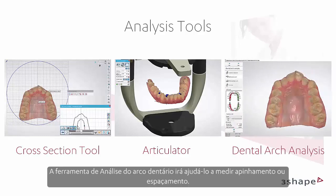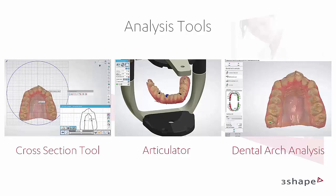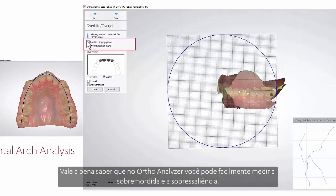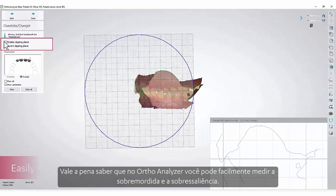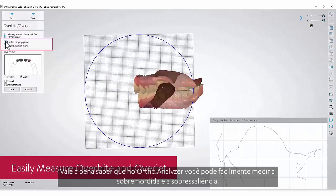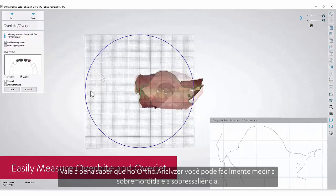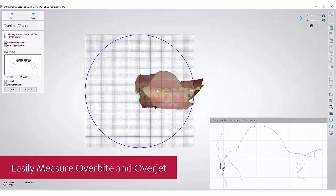The Dental Arch Analysis tool will help you measure crowding or spacing. It is worth knowing that in OrthoAnalyser, you can easily measure overjet and overbite.